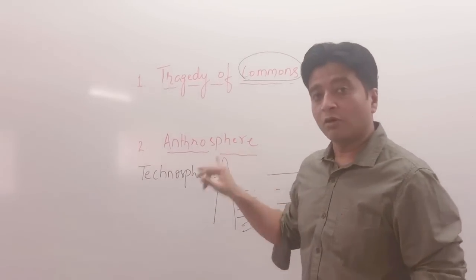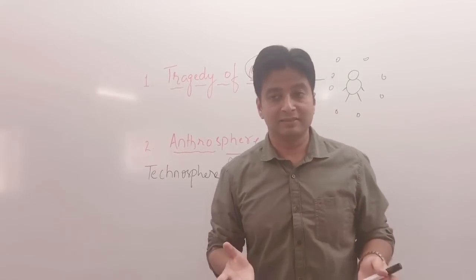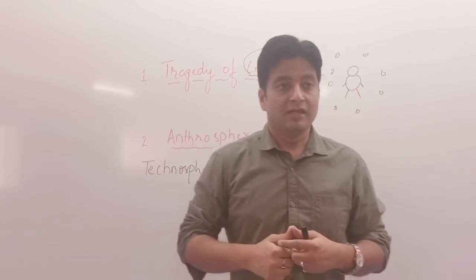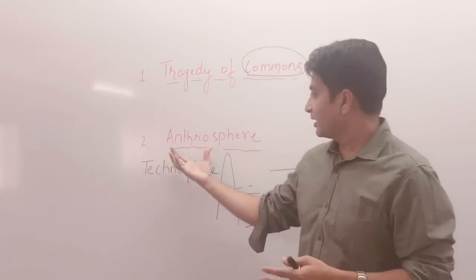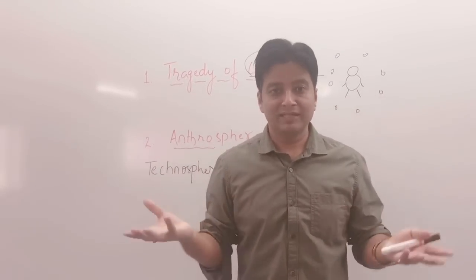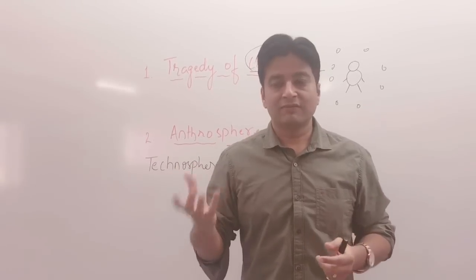Now we can talk about another term, anthrosphere. It is also called technosphere. What do we mean by this? So there is something called oceanosphere, there is something called atmosphere. The anthrosphere is not the natural one. It is human-made, man-made kind of activities.